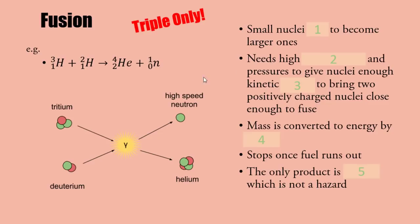Fission: large nuclei splitting to form smaller ones. In both nuclear reactions, mass is converted to energy by E equals mc squared. Two or three neutrons go on to cause other fissions - that's the chain reaction. This can be controlled by capturing neutrons using control rods. Fission has radioactive products. Fusion: small nuclei fuse or join to become larger ones. You need high temperature and pressure to give nuclei enough kinetic energy. Again, mass converts to energy, massive amount. It stops once fuel runs out. The only product is helium, which is not a hazard.